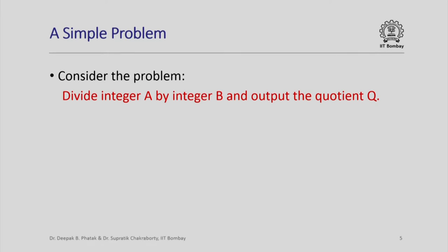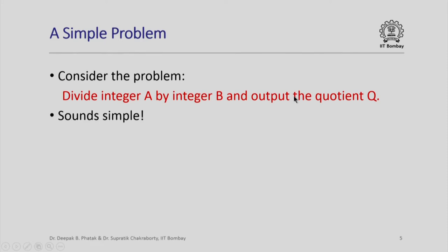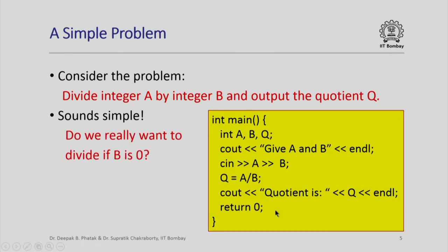Suppose I want to divide the integer a by the integer b and output the quotient q. This sounds simple — you declare three integer variables a, b, and q, get the inputs a and b, compute the quotient, output it, and return 0. However, what would happen if b was 0? We would effectively be doing a division by 0, which is not a well-defined operation.